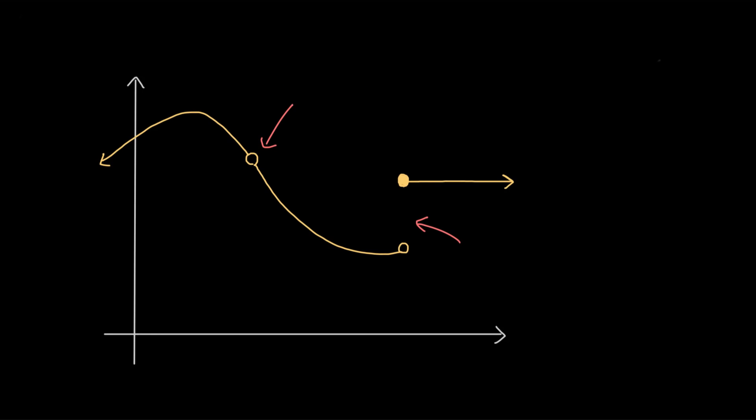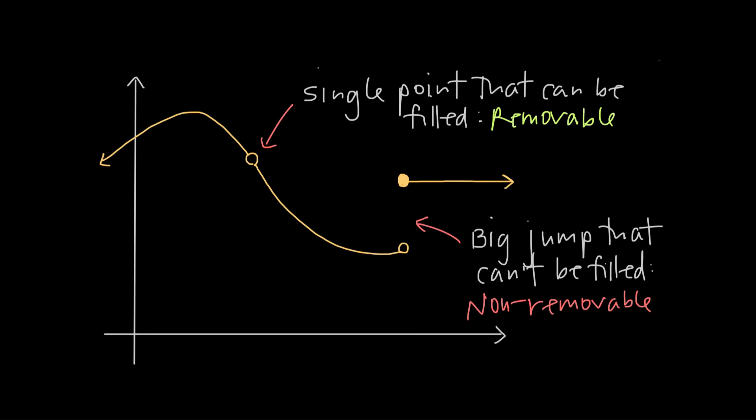The reason these discontinuities are removable when the others aren't is because a discontinuity is only removable when you can patch the holes in the graph by redefining the function. When you can't easily patch the holes because the gaps in the graph are bigger than a single point, you're dealing with non-removable discontinuities.